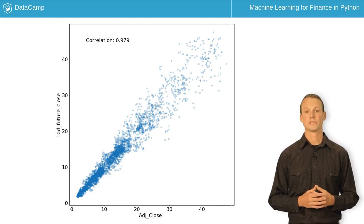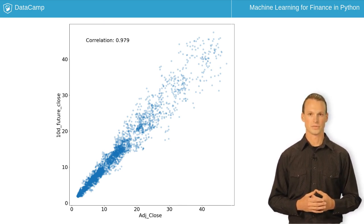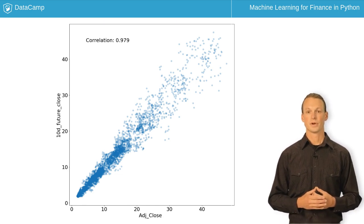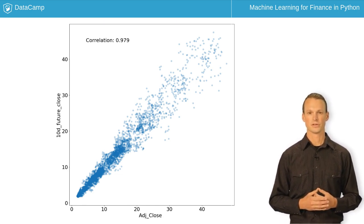However, this is deceiving. Although it looks like we can predict future prices based on the current price, it's only a mirage. The range of future prices based on the current price is too large to be useful.